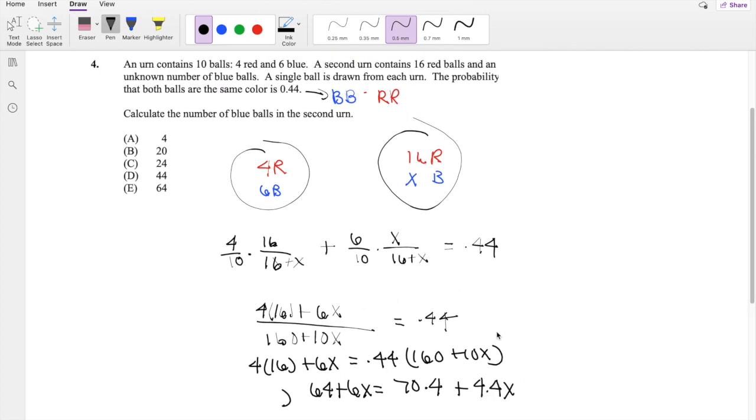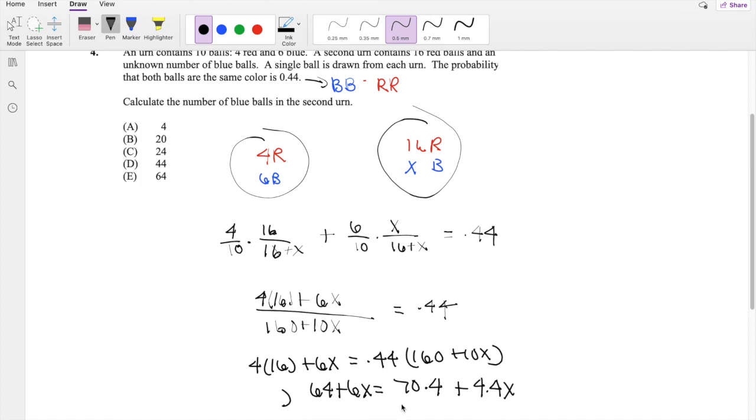So now I can just put the x's together and the others together. So on this side we get 6 minus 4.4, which is 1.6x, is equal to 70.4 minus 64, which is 6.4. So then x is equal to 6.4 divided by 1.6, which is our answer 4.